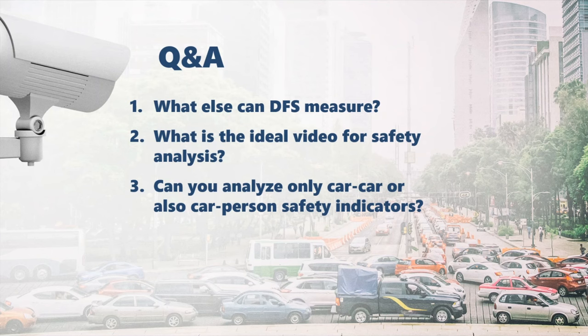The second question is: what is the ideal video for safety analysis? In general, an aerial video taken from a 90-degree perspective is the ideal position — in that case, the accuracy of the detected safety values is the highest. The last question from the first part: can you analyze car-to-car or also car-to-person safety indicators? Yes, our tool can analyze all interactions within the same group — car to car — but also among different users such as car to pedestrian or car to bicycle.